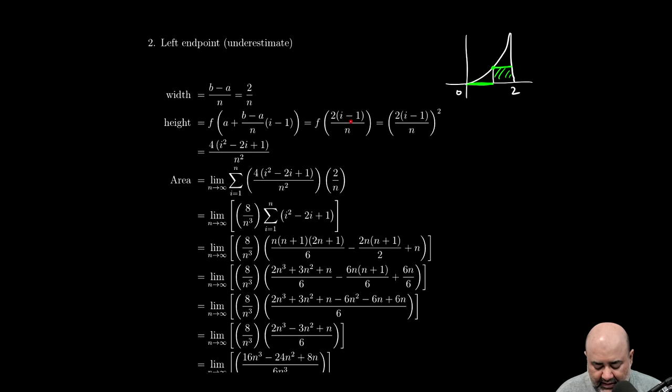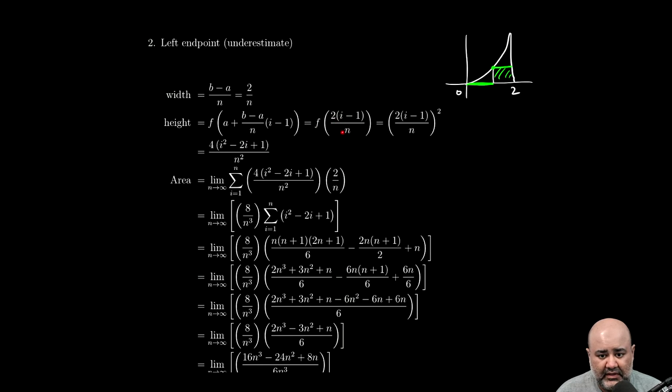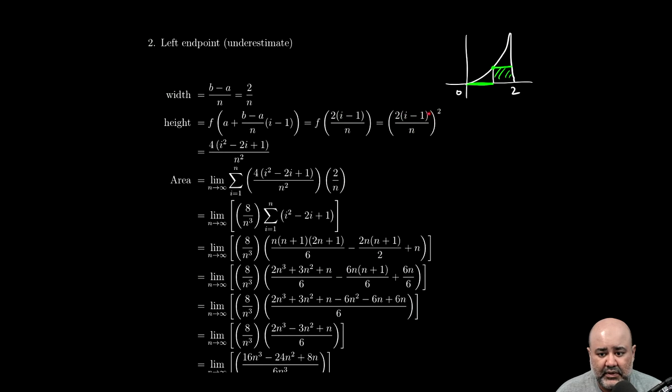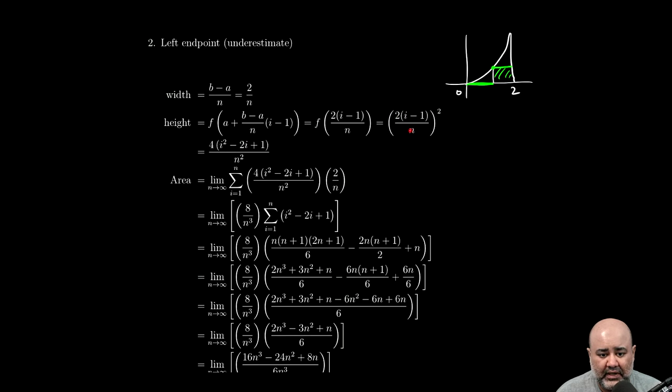2 over n times i minus 1. Now, this is all being evaluated with an f. f was the function x squared. So if I were to take this and square it, I would get the output value at that point. So here we have 2 times i minus 1 over n, the quantity squared. If we distribute the square, we get 4, because 2 squared is 4, over n squared. And then if we multiply this out or square it, we get i squared minus 2i plus 1, which is right here.